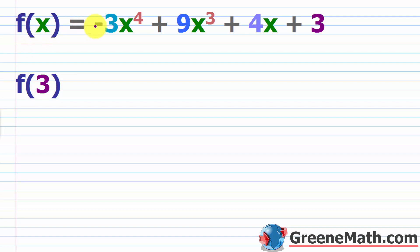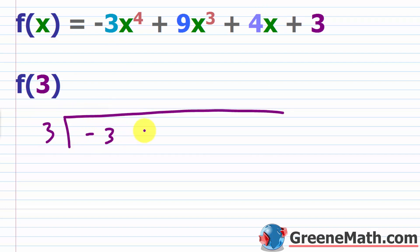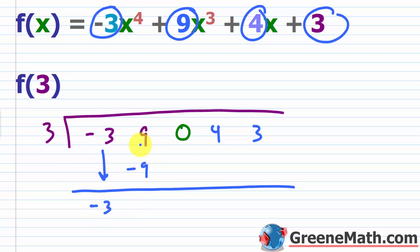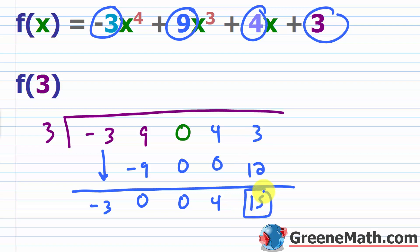We have f of x equals negative 3x to the fourth power plus 9x cubed plus 4x plus 3. We want to find f of 3. This is very important — people forget this all the time and get the wrong answer. I started with the fourth power, then cubed, but I don't have x squared, so I must write a zero in as a placeholder. Coefficients: negative 3, 9, 0 (placeholder for x squared), 4, and 3. Synthetic division gives: 3 times negative 3 is negative 9; 9 plus negative 9 is 0; 3 times 0 is 0; 0 plus 0 is 0; 3 times 0 is 0; 4 plus 0 is 4; 3 times 4 is 12; 3 plus 12 is 15. So f of 3 is 15.